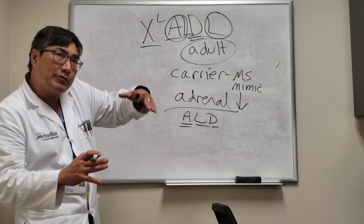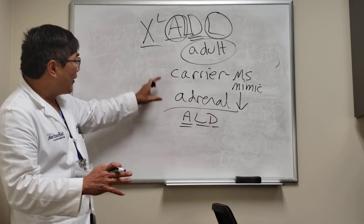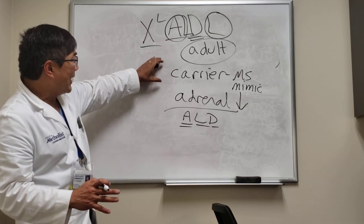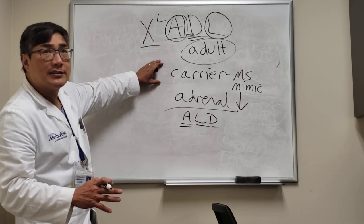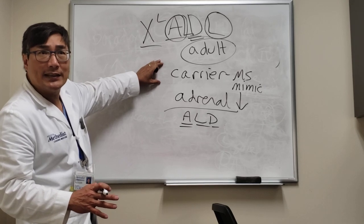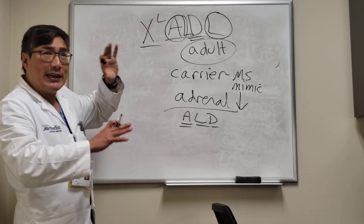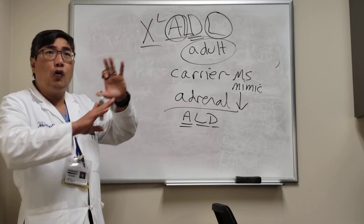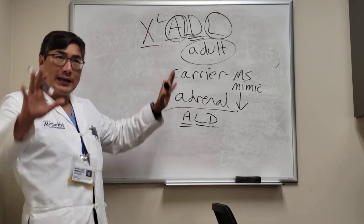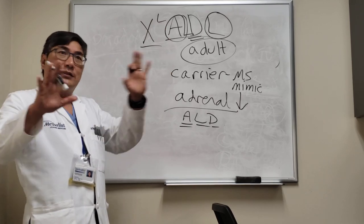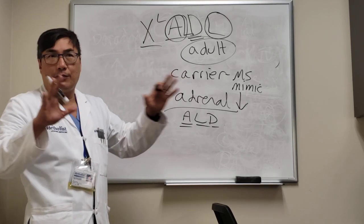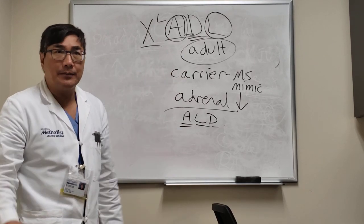These symptoms can be slowly progressive, and patients are often diagnosed late in adulthood because they are in a carrier state, which means they have mosaicism — parts of the body are working and parts aren't — making it very difficult to make the diagnosis.